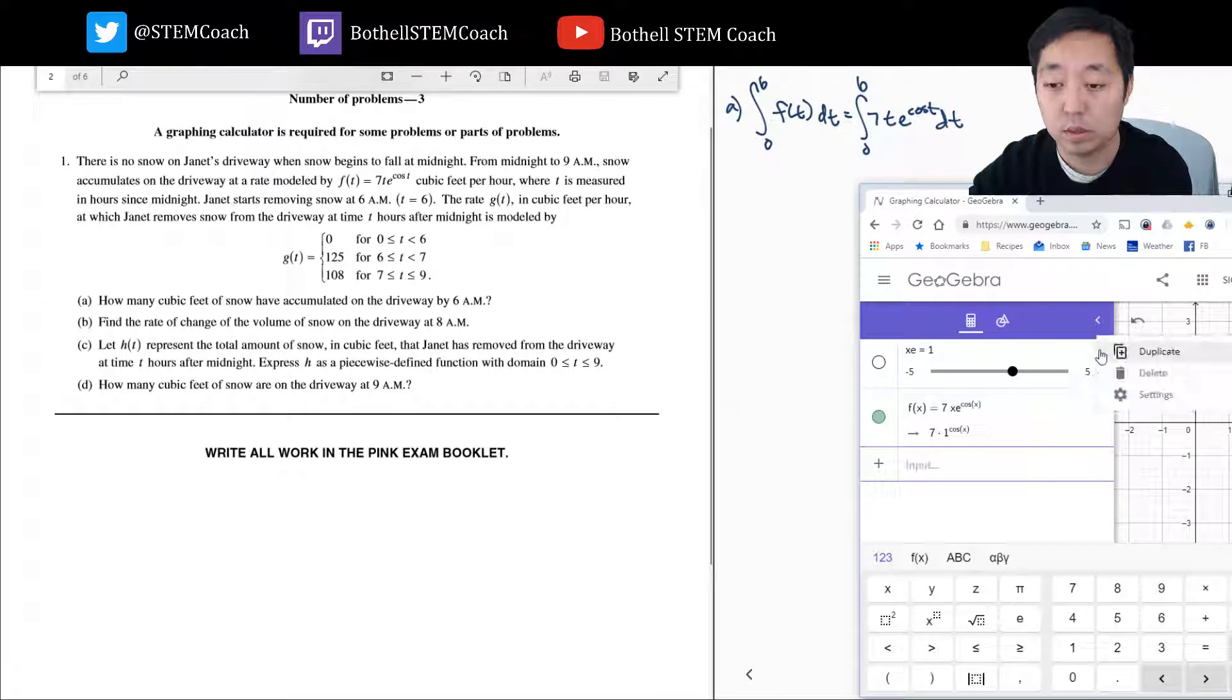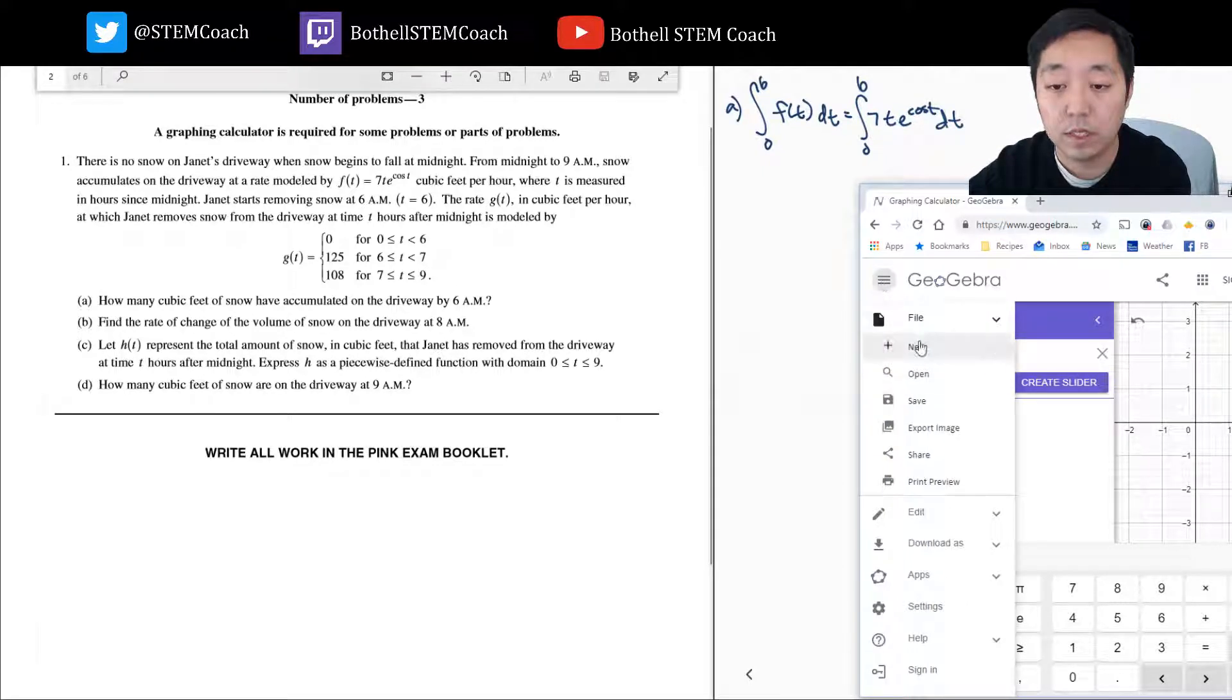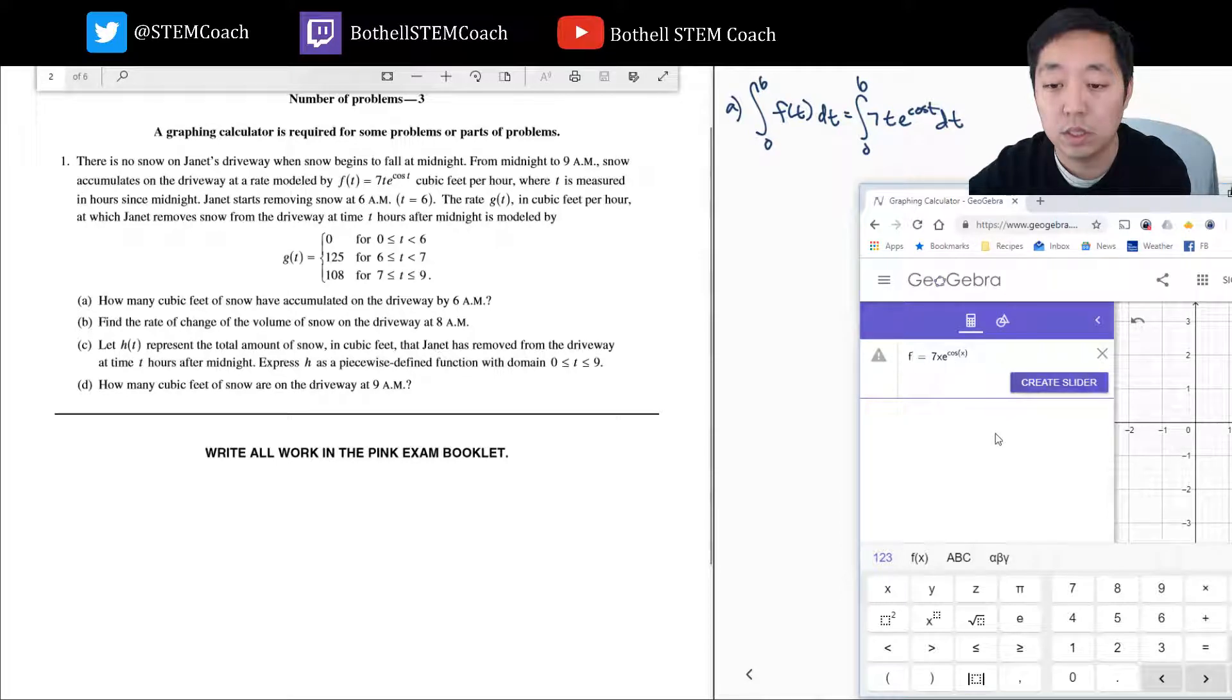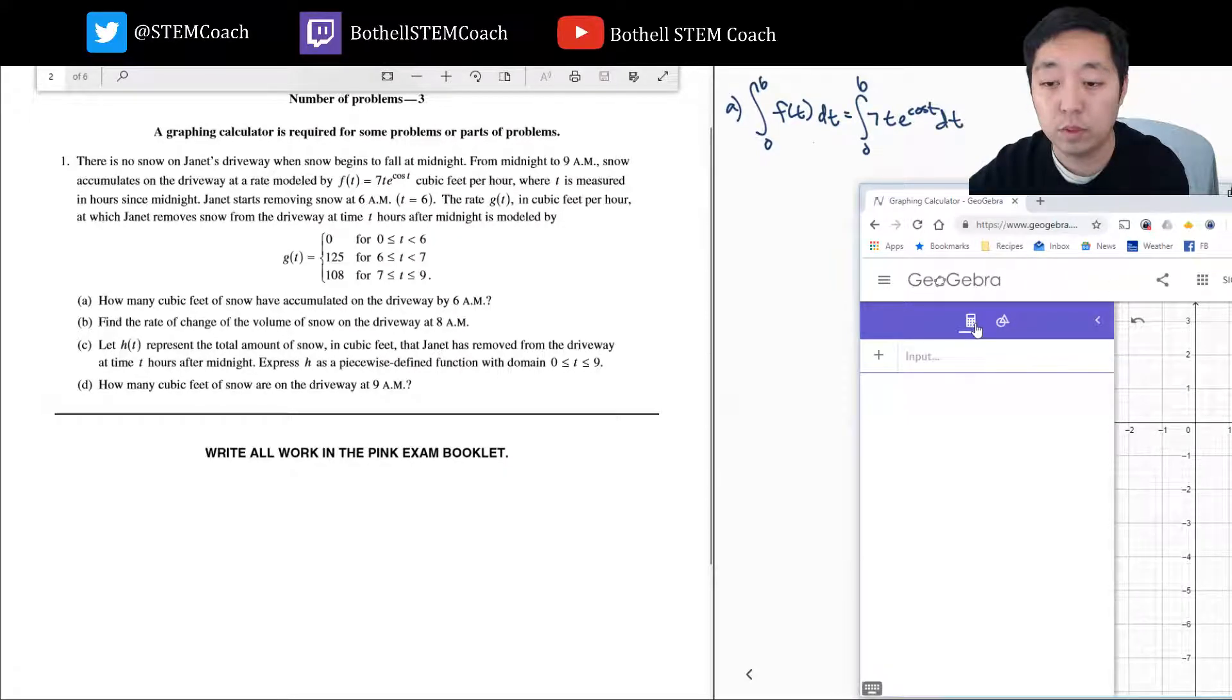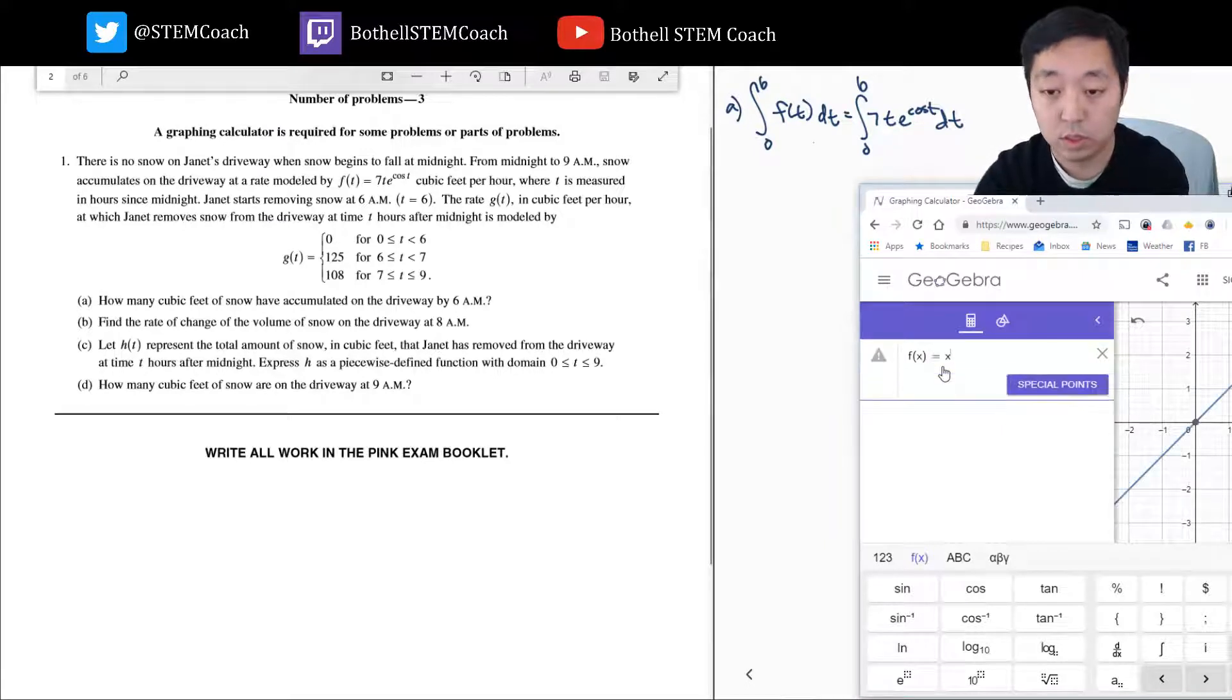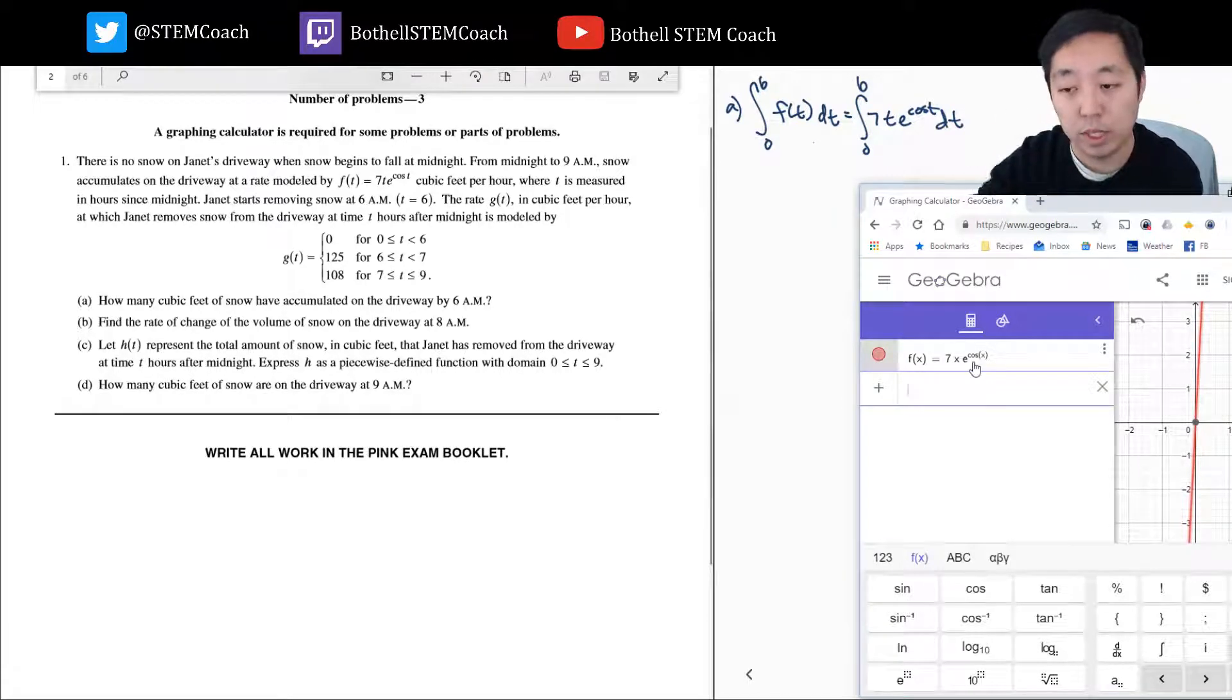I'm going to say f(x) is equal to 7x e to the cosine x. What is this create slider? I don't want a slider. Is this not a graphing calculator section? What is this problem? Please check my input. I thought this was working - what's going on? Okay, it didn't like that I wasn't multiplying - I was just putting the letters next to each other.